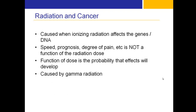A little bit about radiation and cancer. Cancer is generally caused when ionizing radiation affects the genes of the DNA. The speed, prognosis, and degree of pain are not a function of the radiation dose received — they are a function of the probability that effects will develop. This is caused, once again, by gamma radiation.